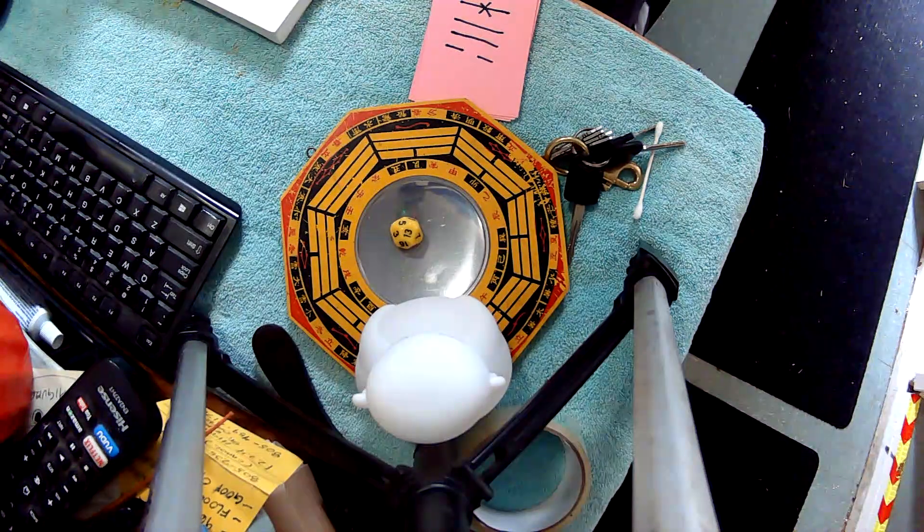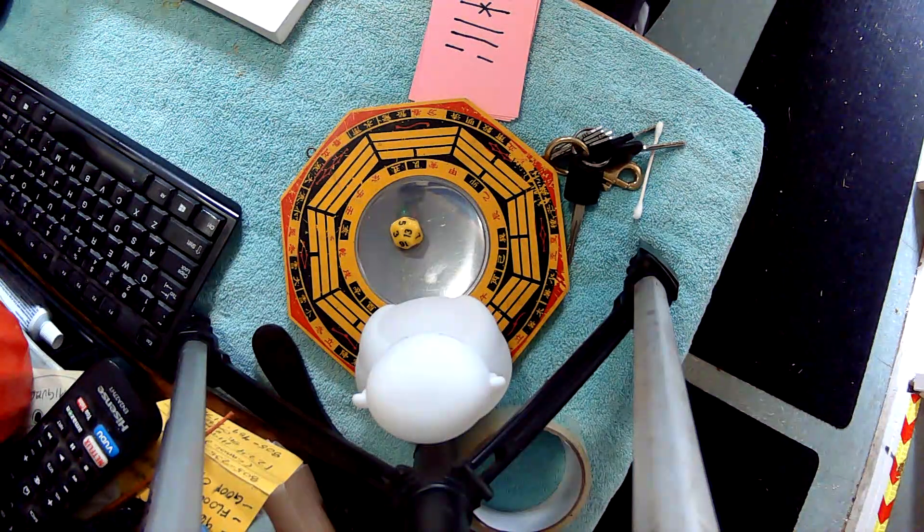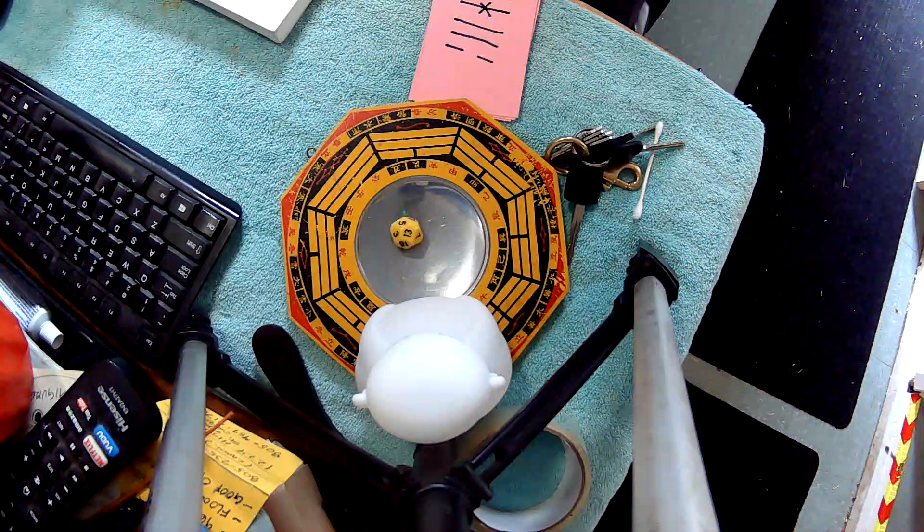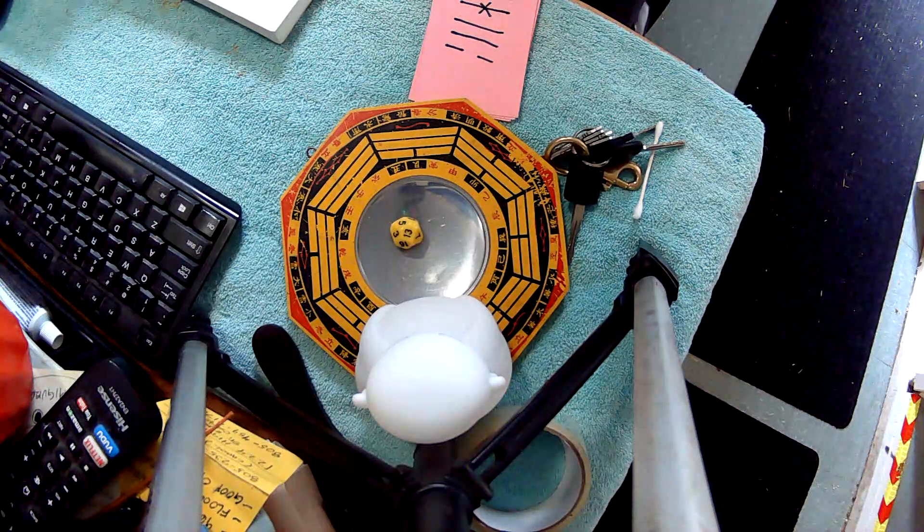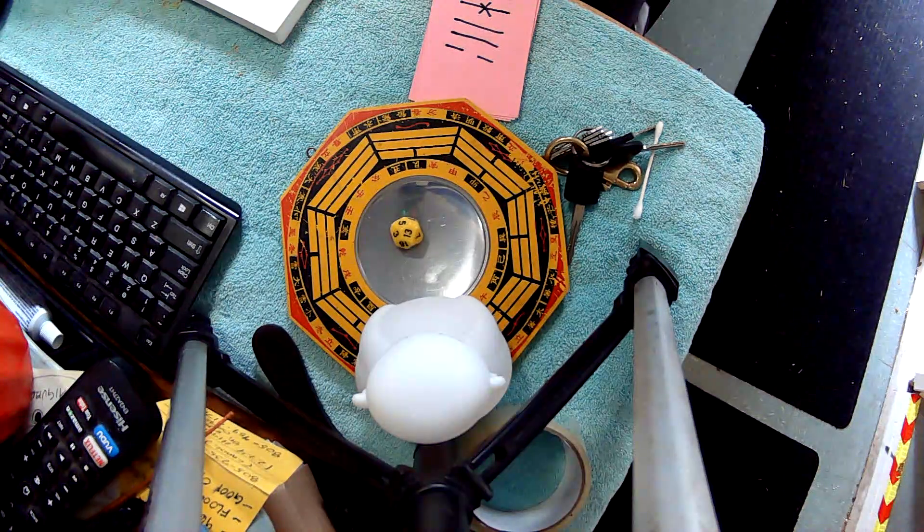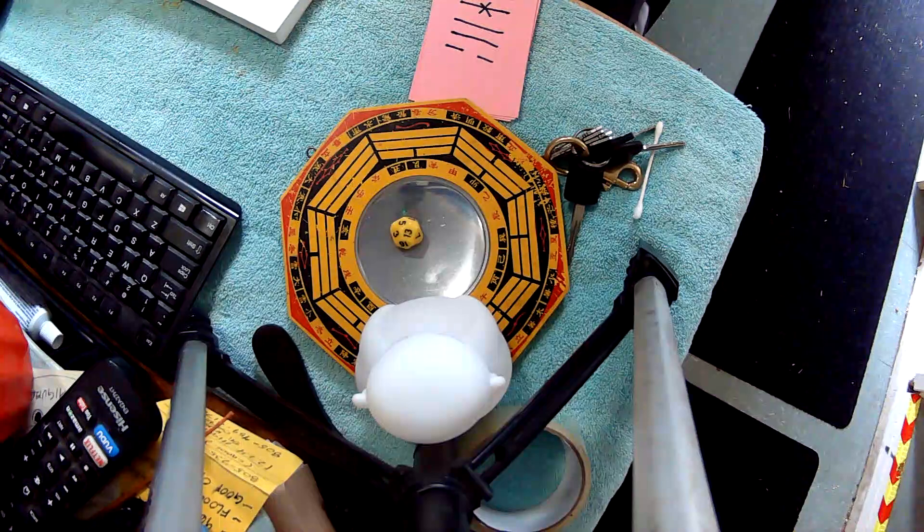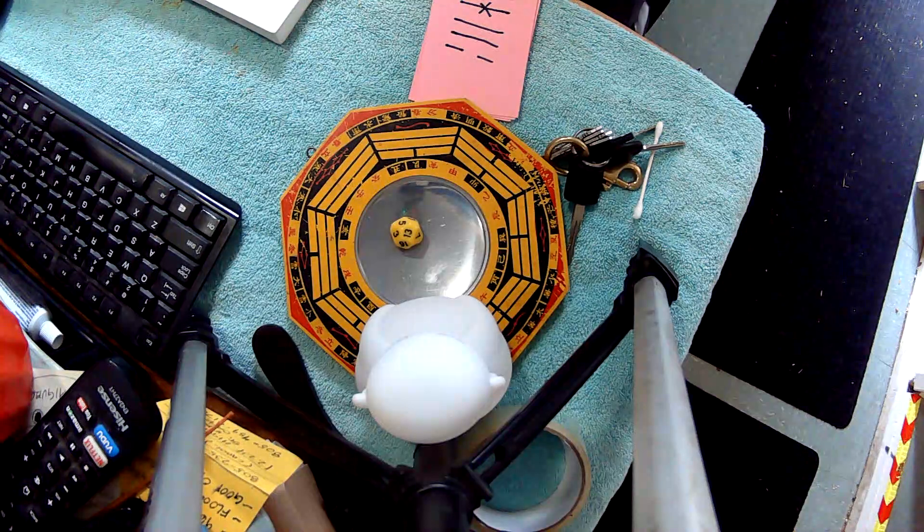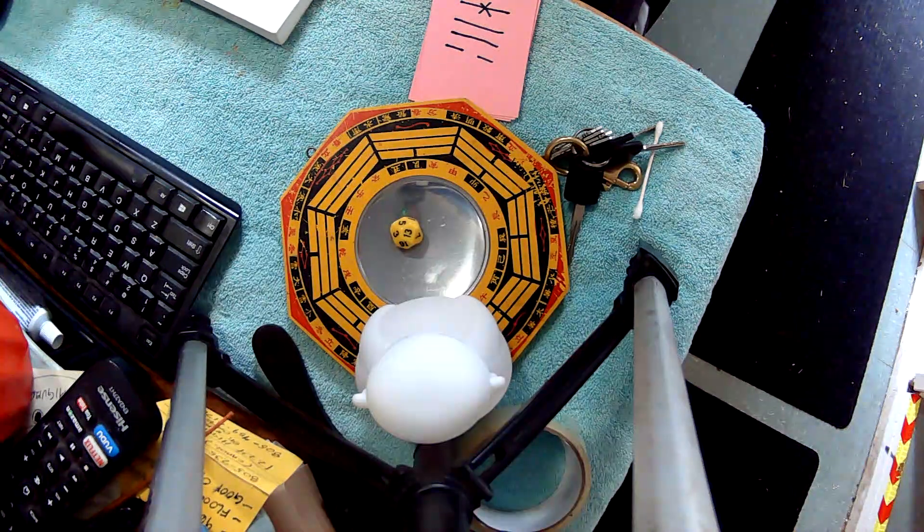Okay, so the bottom trigram is sun, and the upper trigram is tui. Sun, tui. So the hexagram is 28.